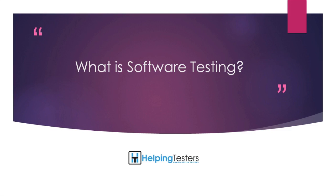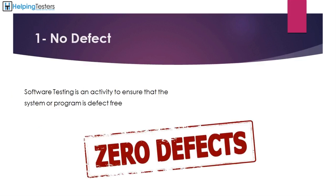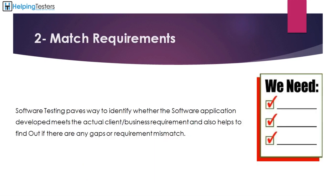This process is called testing. The process of finding bugs and delivering an error-free application to the customer is called software testing. Software testing is nothing but verifying whether the product is performing what it is intended to perform. This intention is termed as requirements, so software testing ensures whether the requirements are matched with the end product. There will be a set of requirements given before development, and testing makes sure the end product matches those requirements.